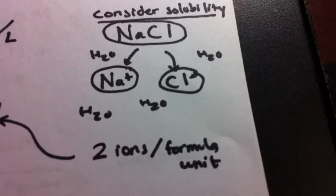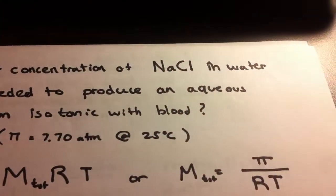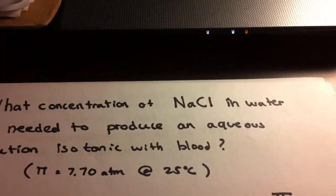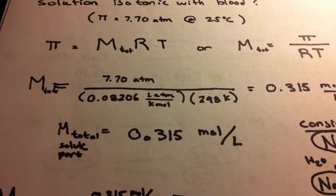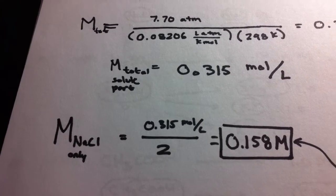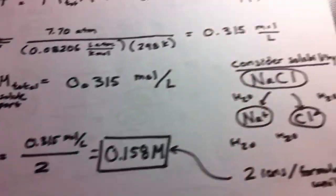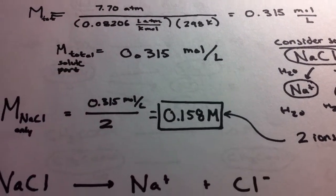Because we have two ions per formula unit, and we want to find not the total but rather the concentration of NaCl, we take the total solute, divide it by two, and that equals the molarity of the NaCl we have initially only. That equals 0.158 molars.